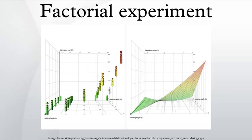Designs can involve many independent variables. As a further example, the effects of three input variables can be evaluated in eight experimental conditions shown as the corners of a cube. This can be conducted with or without replication, depending on its intended purpose and available resources. It will provide the effects of the three independent variables on the dependent variable and possible interactions.